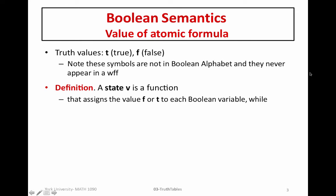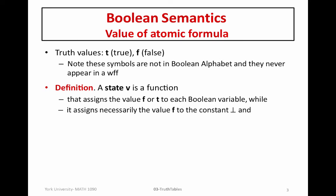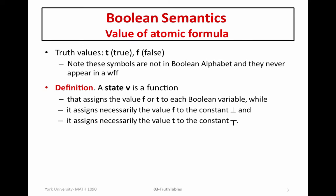In order to assign a truth value to a well-formed formula, we need to formally introduce something called a state. A state v is simply a function that assigns either the value false or the value true to each Boolean variable. It assigns necessarily the value false to the constant bottom, since we consider bottom as false — even though formally it is just a constant, outside of logic we think of it as our symbol for false. And of course, the state necessarily assigns the value true to the constant top. We use these constants and truth values to think about the meaning of each of these things.